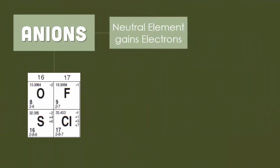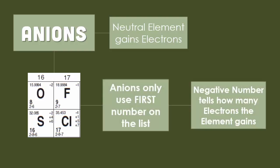Okay, so anions, again, as they're neutral elements that gain electrons, anions only use the first number on the list. Negative numbers will tell you how many electrons the element has actually gained in this case.